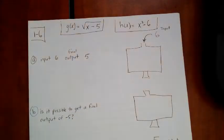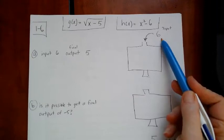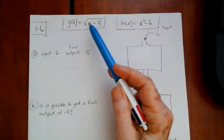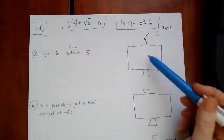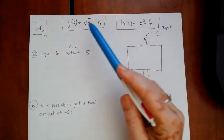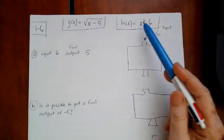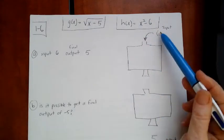So remember it just said that she started out with the input of 6. And so these are the two functions. I just drew a picture of function machines.